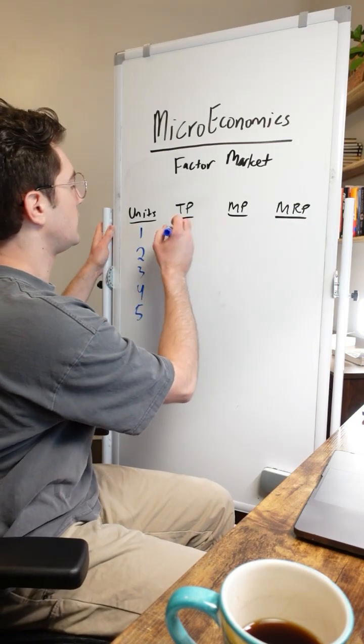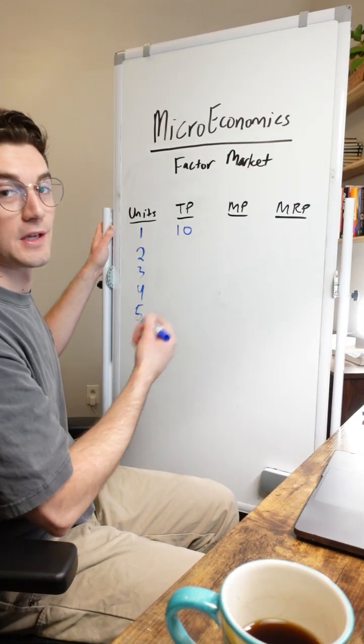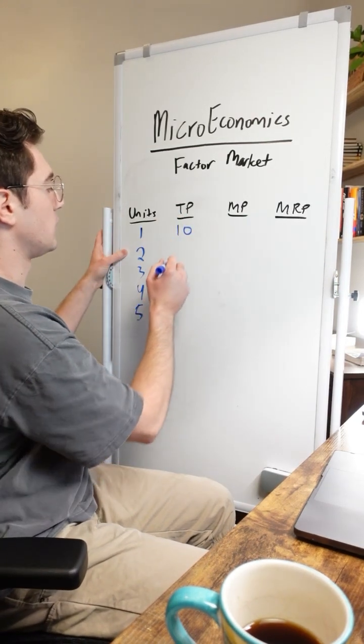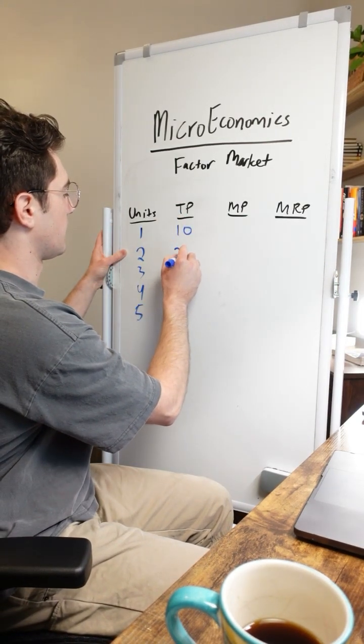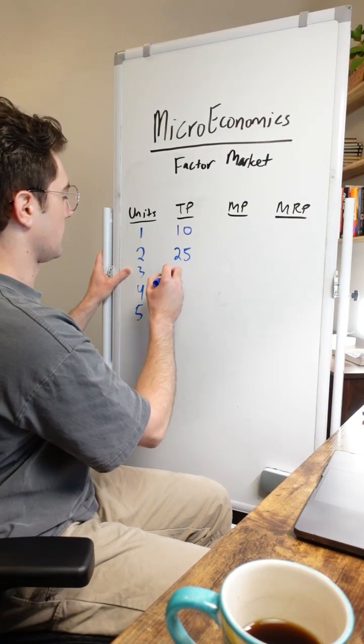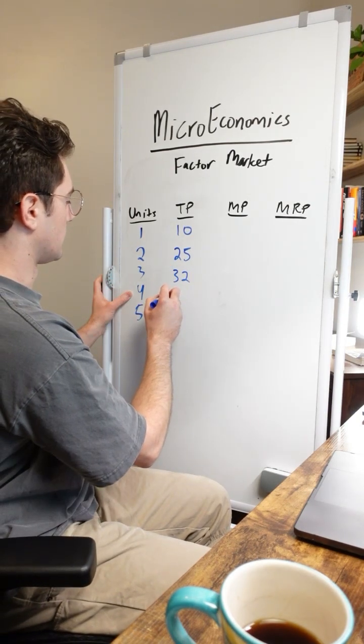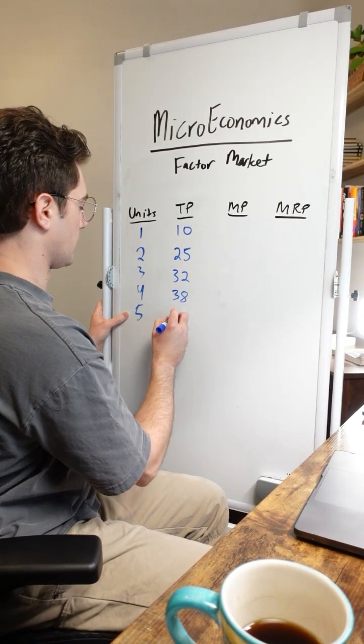If we have one machine, I'm going to say that we can create 10 units of output or 10 units of product. If we have two, let's say we can make 25. Three, we'll say 32. Four, we'll say 38, and five, I'll do 42.